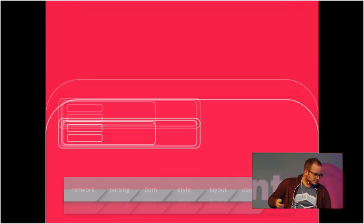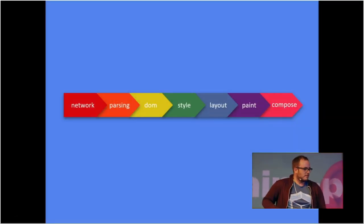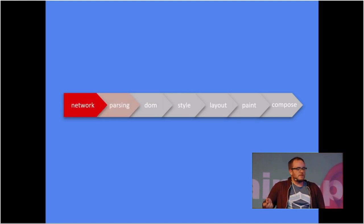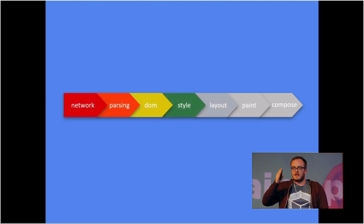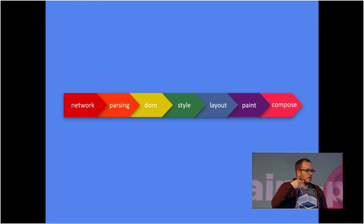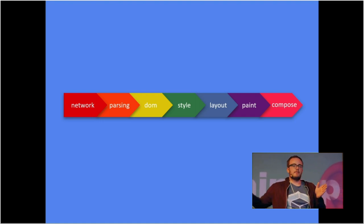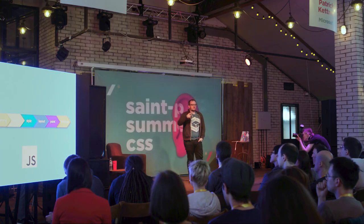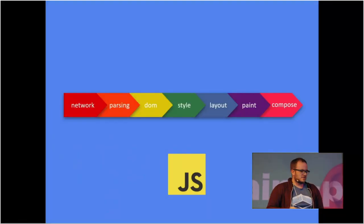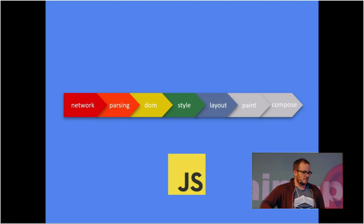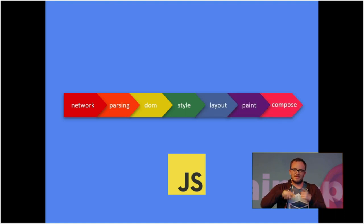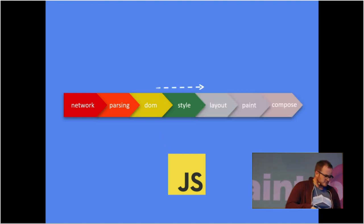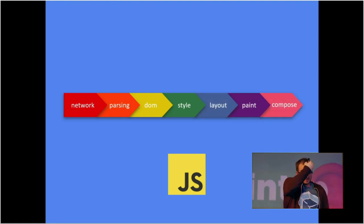The crappy thing about the pipeline is that it always has to run from left to right. Every single time, no matter what you do, it's in that order. So when you do something that causes code to be reparsed at the very early stage — like dynamically inserting a script tag — the whole pipeline has to start all over again. When you interact with the DOM APIs, it triggers a style, layout, paint, compose, et cetera. That's what makes your laptop sound like an airplane taking off.